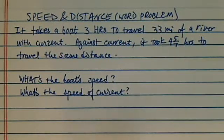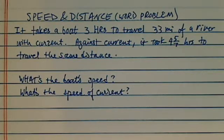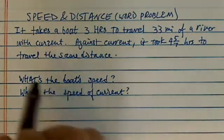Here we have a great word problem. It involves speed and distance. So it's a boat — if it's going against the river, the trip took four and five-sevenths hours. If it's going with the current, it only took three hours. With the given information, we're supposed to find the boat speed and the speed of the current. This is a really great problem for our system of equations, so let's get started.